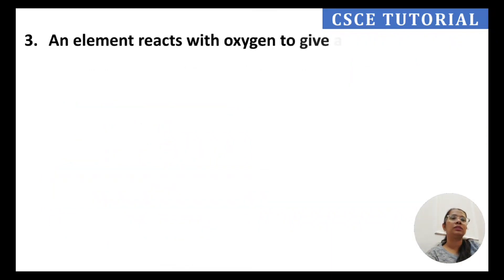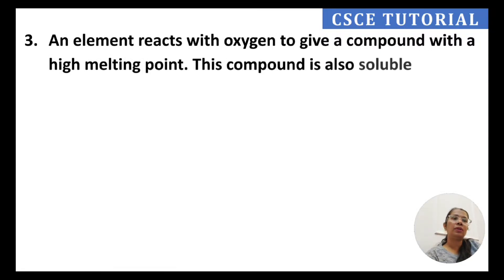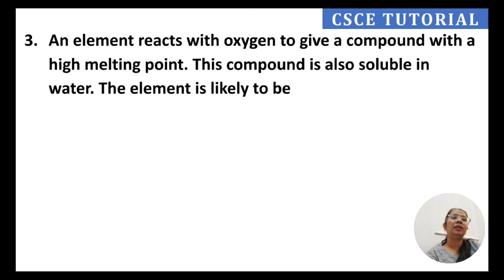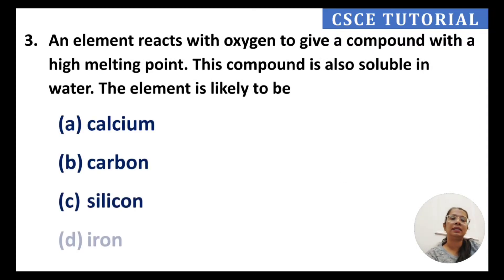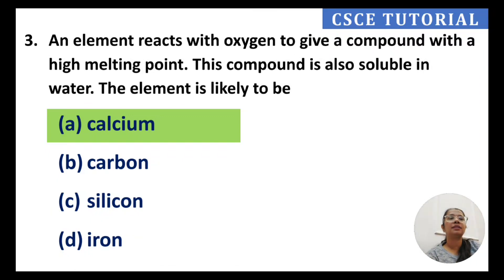Question 3: An element reacts with oxygen to give a compound with a high melting point, which is also soluble in water. The element is likely to be calcium. Calcium reacts with oxygen, and the resulting calcium oxide has a high melting point and is also soluble in water.